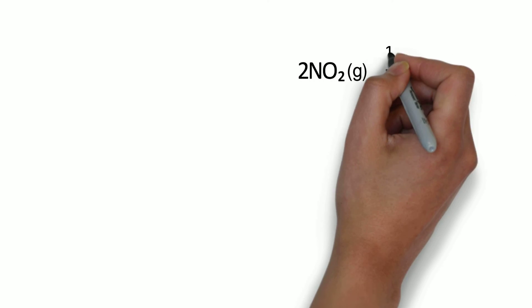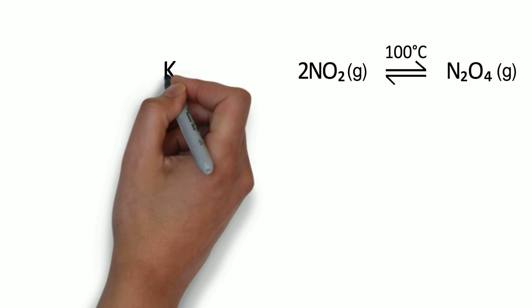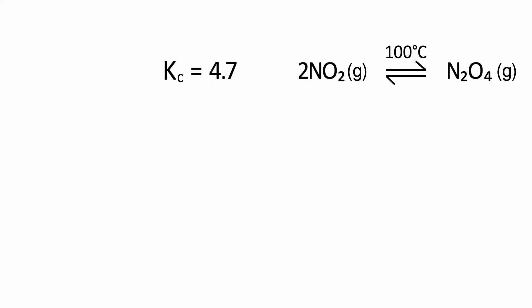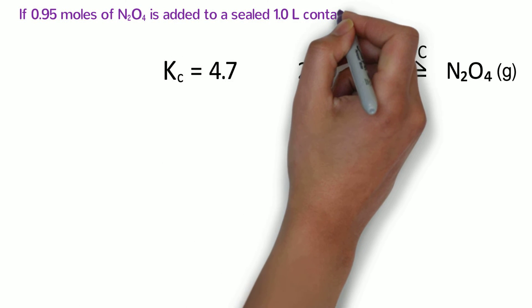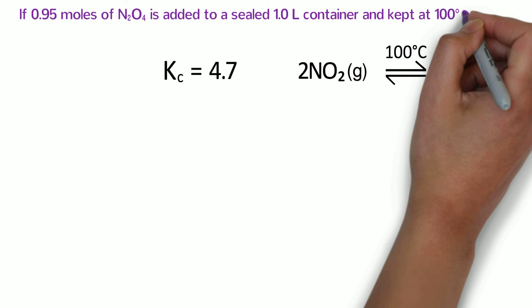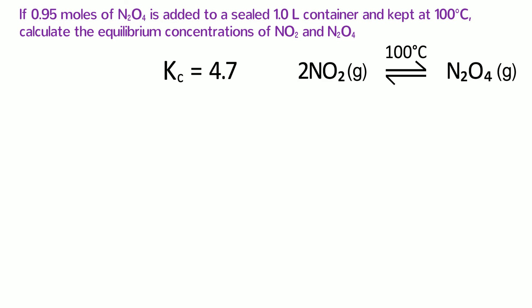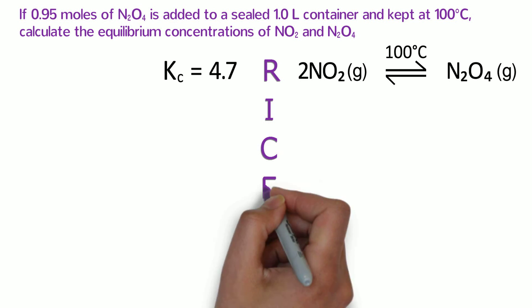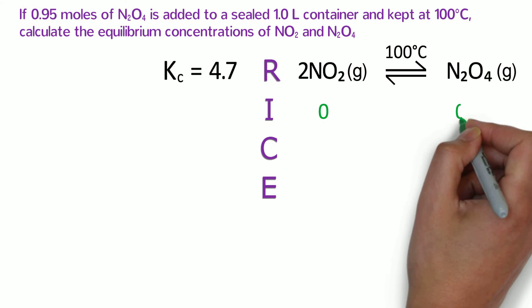Nitrogen dioxide dimerizes at 100 degrees Celsius to make dinitrogen tetroxide. Under these conditions, Kc equals 4.7. If 0.95 moles of dinitrogen tetroxide is added to a sealed 1 liter container and kept at 100 degrees Celsius, calculate the equilibrium concentrations of nitrogen dioxide and dinitrogen tetroxide. Like most equilibrium problems, it is best to start by making a RICE table. We already have the balanced reaction.